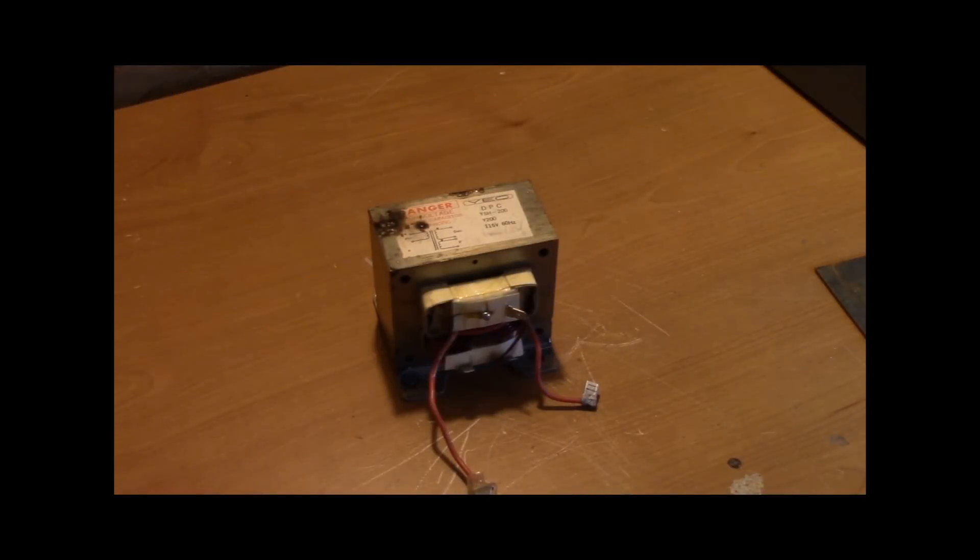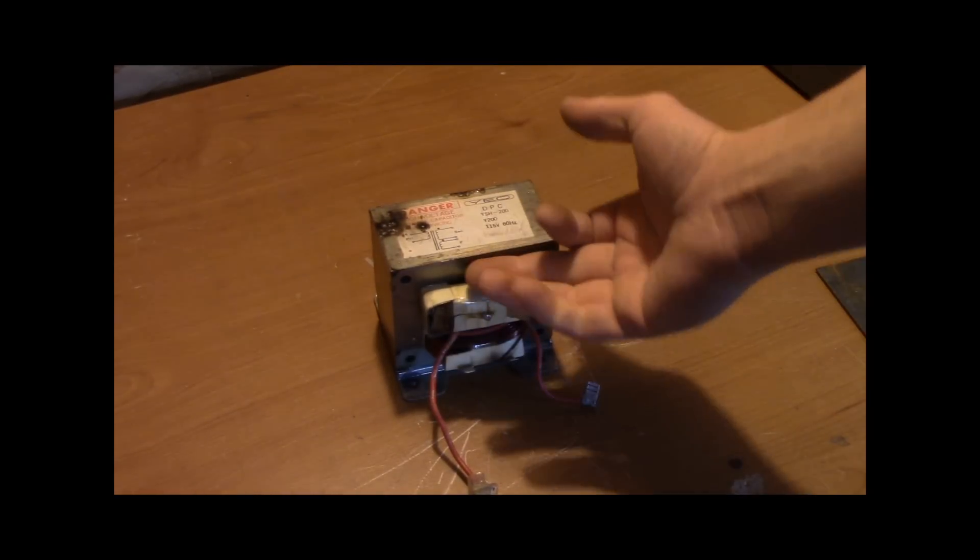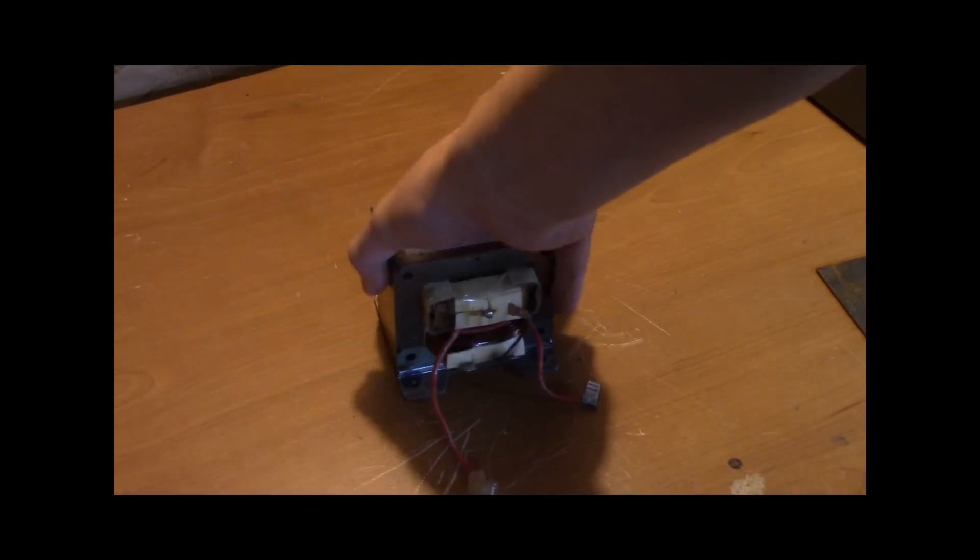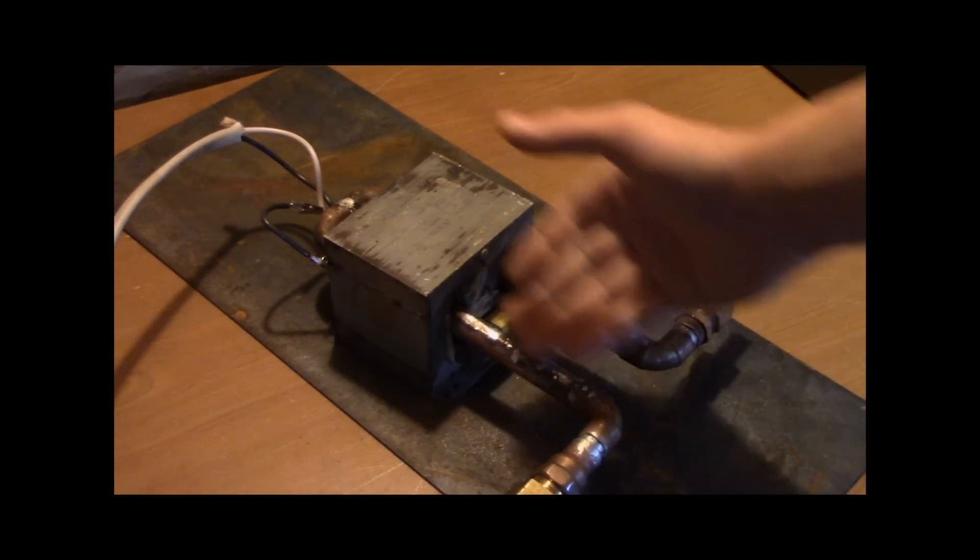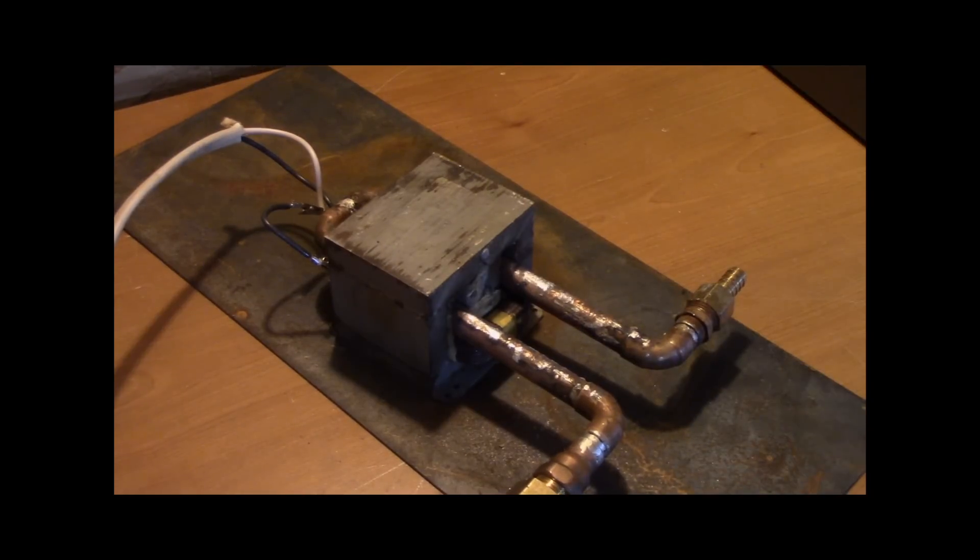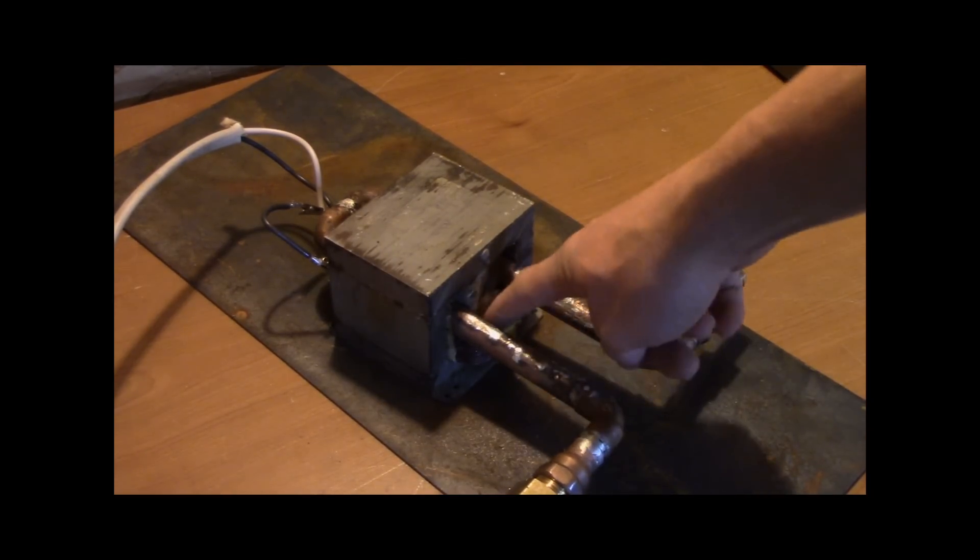So now you guys have seen what happens when you have many more turns on your secondary coil than your primary coil. But what happens if you have the exact opposite? What happens if you have one single loop on your secondary coil, such as this copper plumbing pipe, and many more turns on your primary coil?